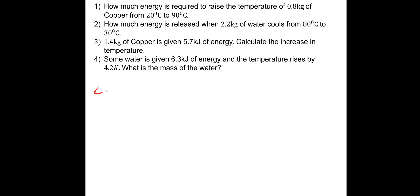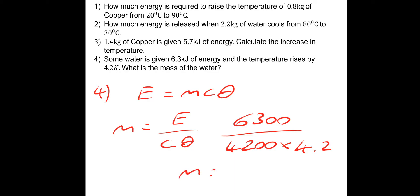Last one, number 4. Some water is given 6.3 kilojoules of energy, and the temperature rises by 4.2 Kelvin. What is the mass of the water? E equals mcθ yet again. We're going to find mass, so it's energy divided by cθ. The energy is 6,300, divided by c for water, 4,200, times change in temperature, 4.2. That will give a mass equal to 0.36 kilograms. Hopefully those all went okay.